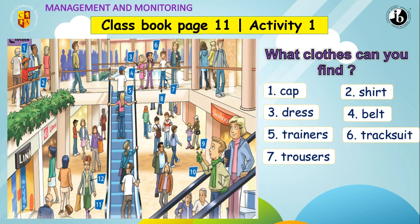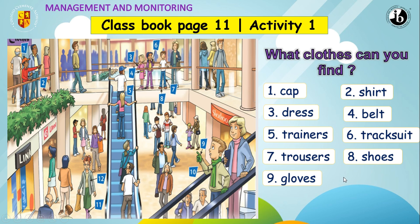Number seven — what are these? These are trousers. Good job. Number eight — what are these? These are shoes. Good job. Number nine — what are these? These are gloves. Good job. And number ten — where's number ten? Number ten is a scarf. Good job.